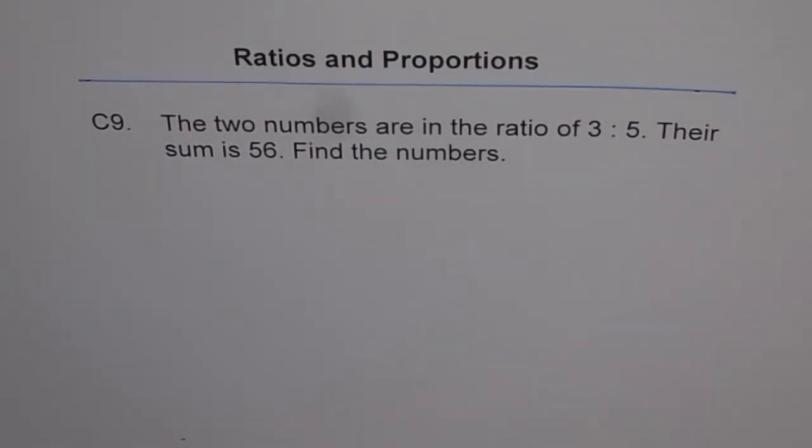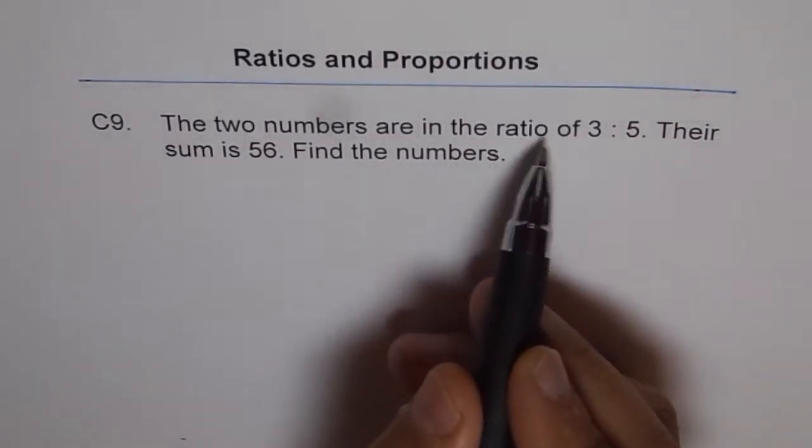Ratios and proportions, C9. The two numbers are in the ratio of 3 is to 5. Their sum is 56. Find the numbers. So we are getting into slightly more complicated questions now. Two numbers are in the ratio of 3 is to 5.